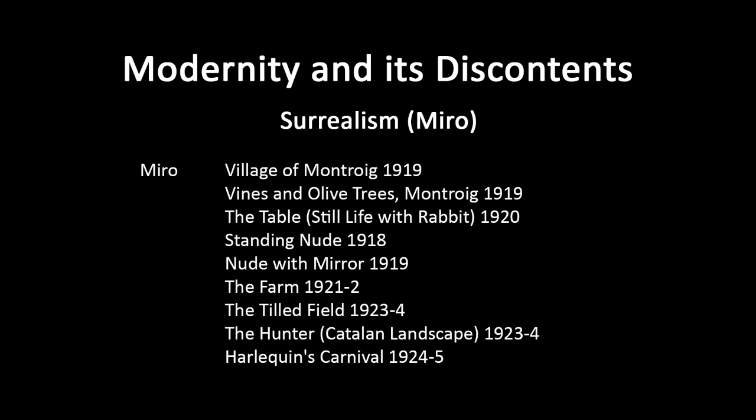The Table, Still Life with Rabbit, 1920. It's a sort of realism intensified to the point where it almost undermines itself, and then a stylization in the treatment of the shadows beneath the table — a kind of kitchen still life. I'll move quickly because these are really early works before he's found his signature style, just to give you an idea of where he came from. The Standing Nude, 1918.